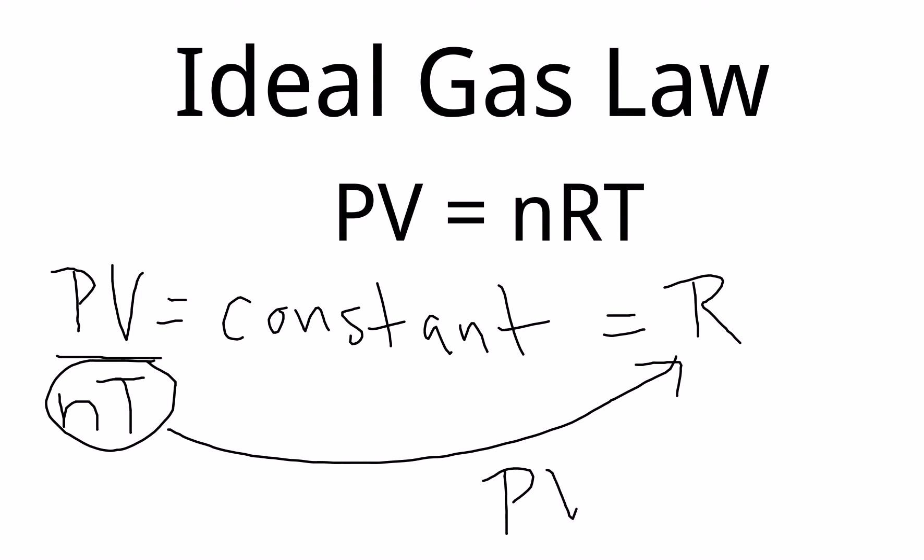which would bring it over here, and I would get PV equals nRT. And what the ideal gas law states is that pressure times volume is going to be equal to the moles of gas present at the temperature of that gas times some constant.